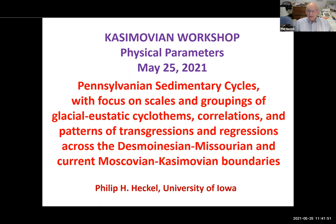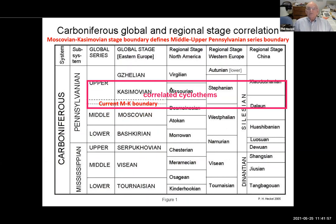This shows, as of 2005, the Carboniferous global and regional stage correlation. The red box in the upper part shows where we have correlated cyclothems in Eastern Europe and North America. The lower dashed line is marked as the Muscovian-Kasimovian boundary, and the upper dashed line is the leftward extension of the Desmoinesian-Missourian boundary.